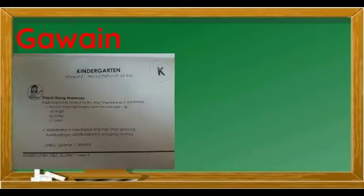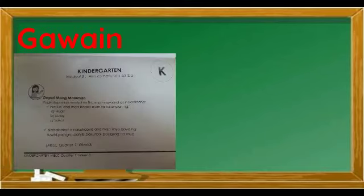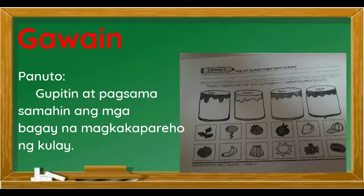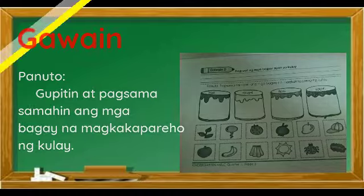Mga bata, para sa ating gawain, ilabas ang module 3, week 3, at buksan sa pahina walo. Panuto: gupitin at pagsamasamahin ang mga bagay na magkakapareho ng kulay. Mag-ingat sa paggamit ng gunting.